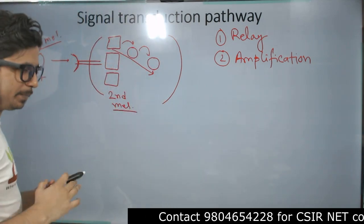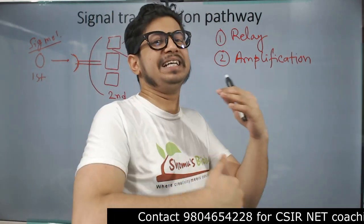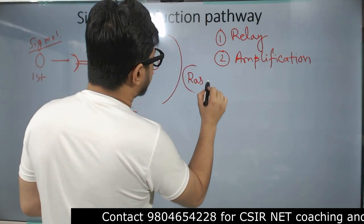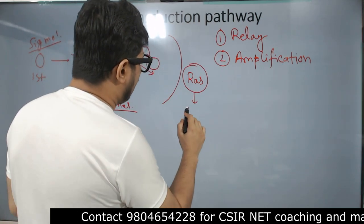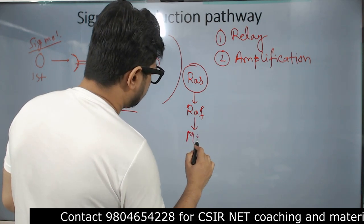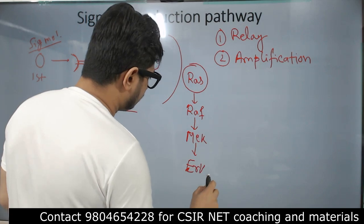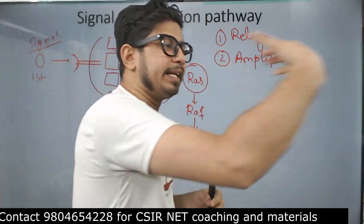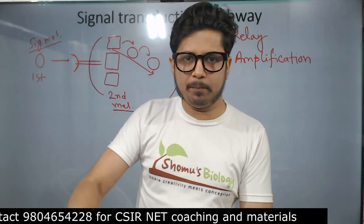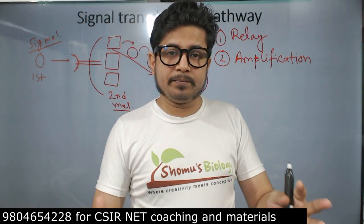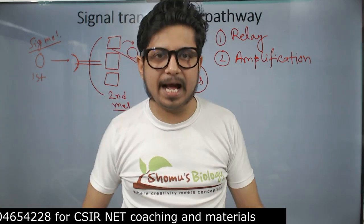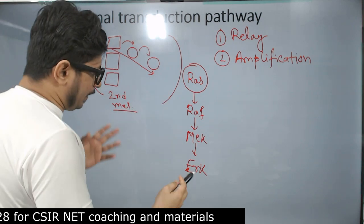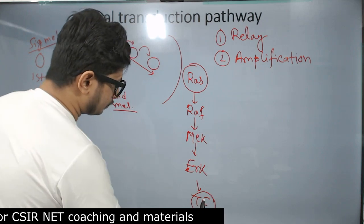Signal transduction involves amplifying the signal through activating a series of proteins — we call it a protein cascade. For example, in the MAP kinase pathway: there is the RAS protein as the effector inside the cell, RAS activates RAF, RAF activates MAKE, MAKE activates ARC. It is a sequential event of activating the next protein — like passing a football and making the ball bigger and bigger as you progress toward the goal.